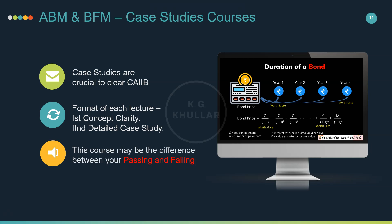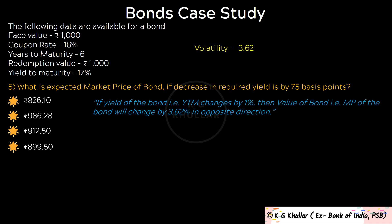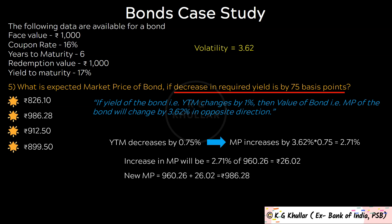The last question is: what is the expected price of the bond if decrease in required yield is by 75 basis points? If yield to maturity decreases by 0.75%, then market price will increase by 3.62% × 0.75 = 2.71%. Increase = 2.71% of 960.26 = Rs.26.02. New market price = 960.26 plus 26.02 equals Rs.986.28. Thus the correct option is option B.